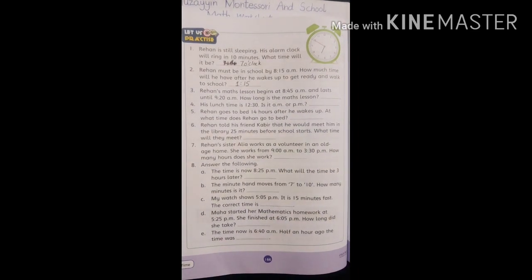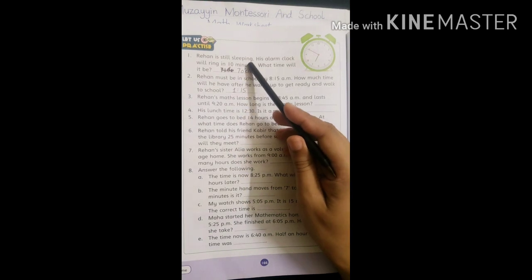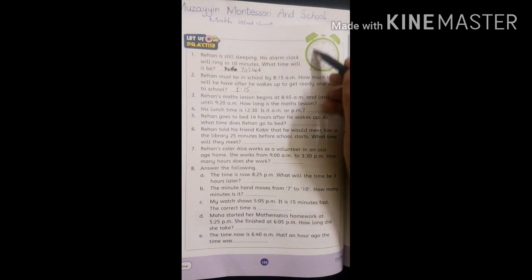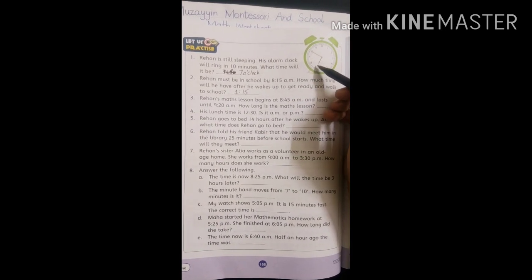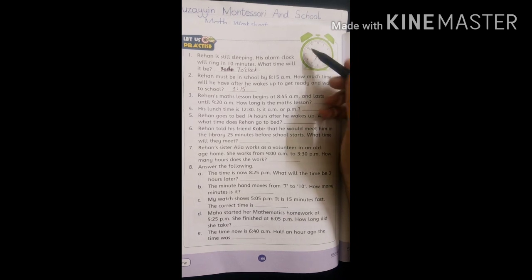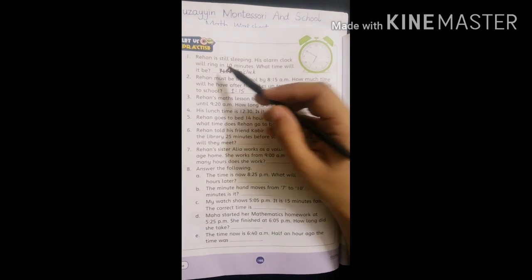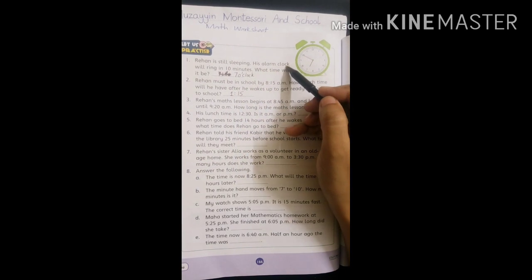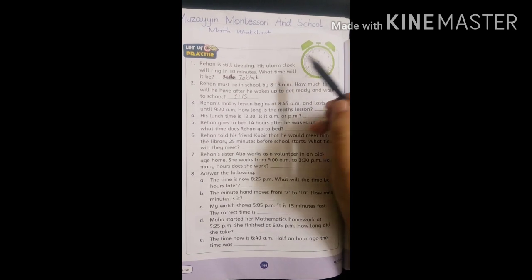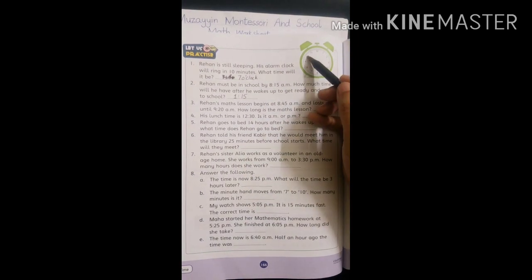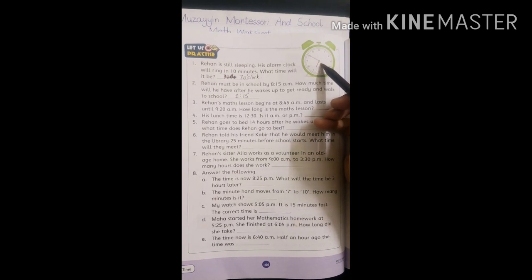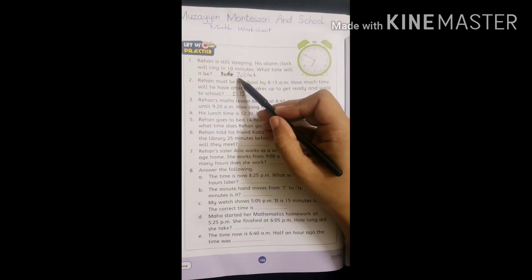Let us practice filling in the blanks. Rehan is still sleeping. A clock is given here with time 6:50, which is 10 to 7 o'clock. The hour hand is between 6 and 7, and the minute hand is at 10, showing 50 minutes. His alarm clock will ring in 10 minutes. What time will it be? It will be 7 o'clock.